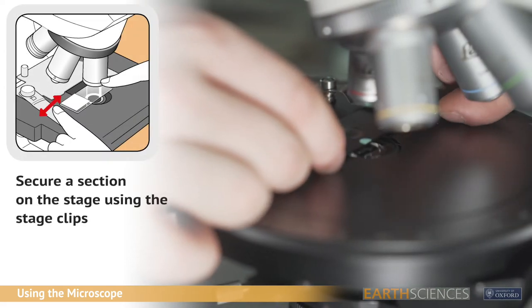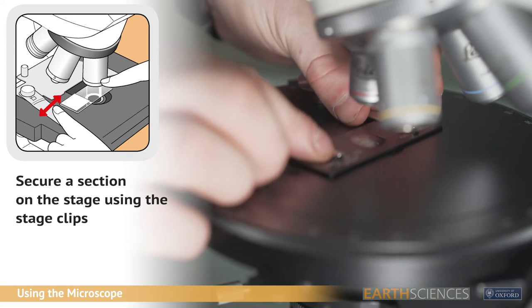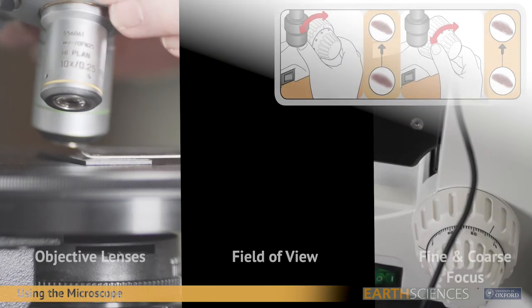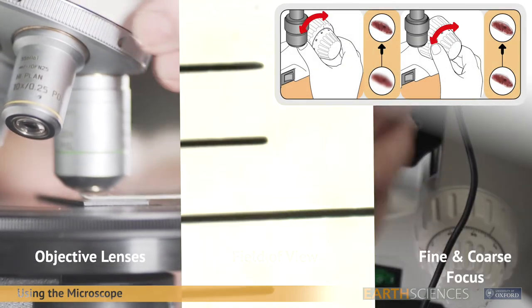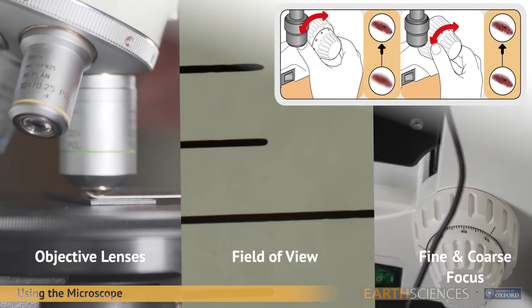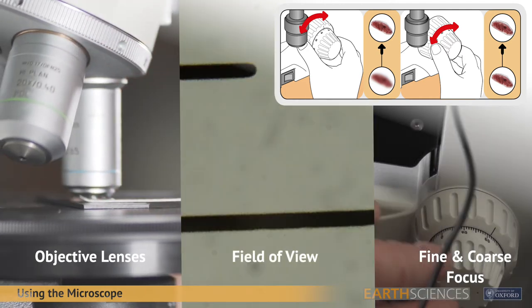Place a section on the stage and fix in place using the stage clips. Use the coarse and fine focus knobs to focus the image as much as practicable, working up to at least 40x magnification. Only the fine adjustment should be required once you have established focus at lower magnifications.